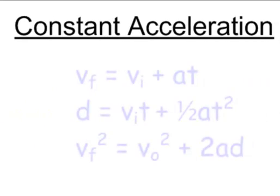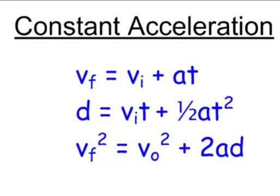Your constant acceleration equations — there are three of them. I'll show you in class what they look like in your Princeton Review Guide and on the equation sheet; this is a simplified version. First: V-final equals V-initial plus A times T. Second: displacement equals V-initial times T plus one-half A T-squared. Third: V-final squared equals V-initial squared plus 2AD. Those are our three constant acceleration equations.